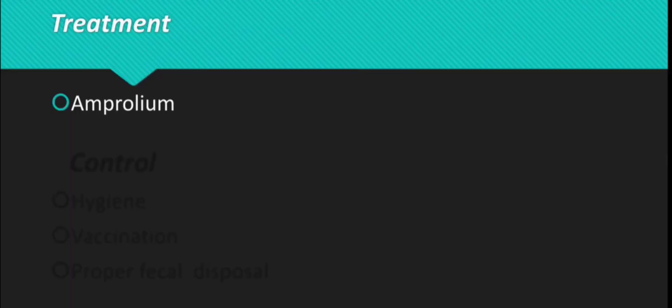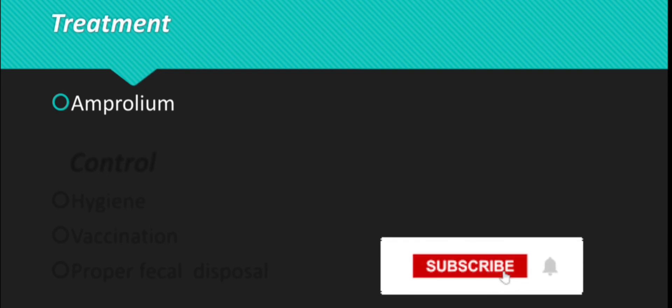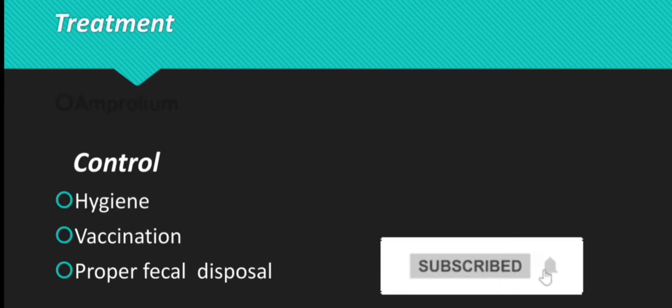For treatment, the drug of choice is Amprolium. Amprolium is mixed with water or drinks for the chickens. Make sure you read the label before giving your chickens the medicine, as each medicine has its own dosage instructions.